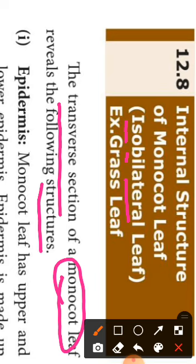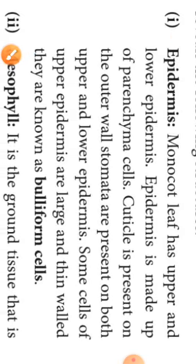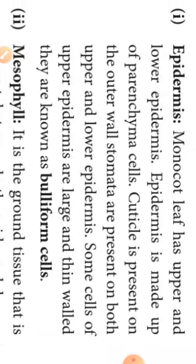The three structures are epidermis, mesophyll, and vascular bundle. First one is epidermis. Monocot leaf has upper and lower epidermis. Epidermis is made up of parenchyma cells. Cuticle is present on the outer wall. Stomata are present on both upper and lower epidermis. Some cells of upper epidermis are large and thin-walled; they are known as bulliform cells.